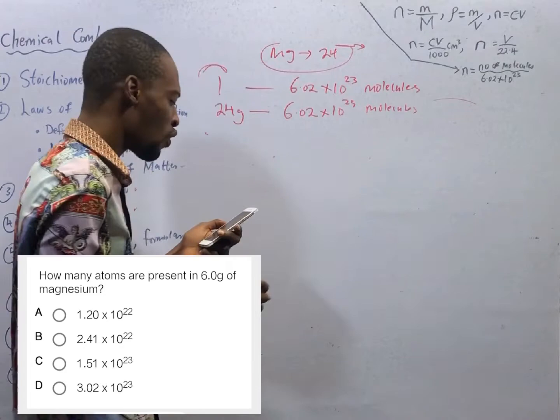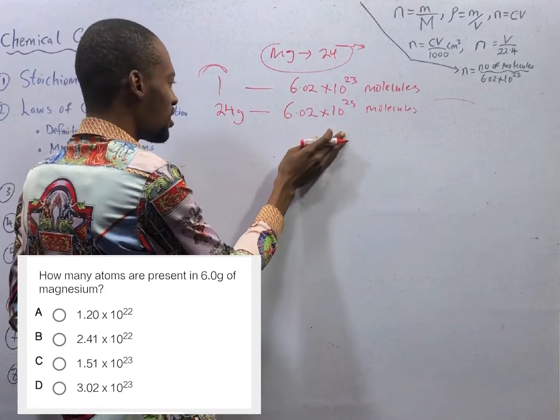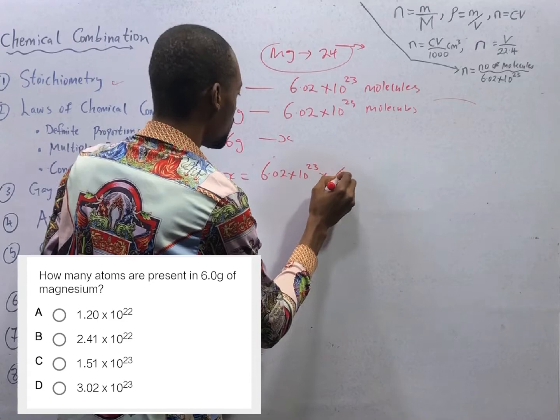Therefore, what will 6 grams of magnesium contain? If 24 grams contains 6.02 × 10²³, then 6 grams will contain S. So S equals 6.02 × 10²³ times 6 all over 24. That should give you 1.51 times 10 to the power of 23.